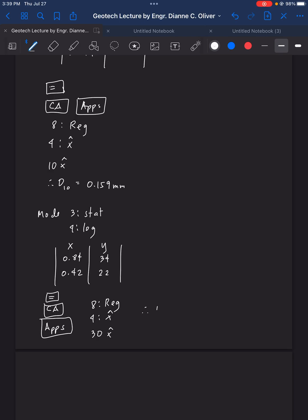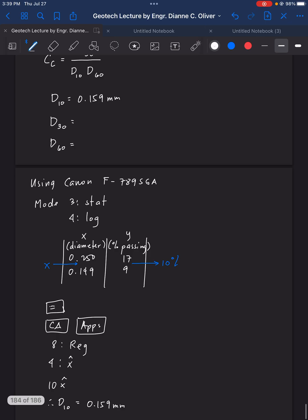Therefore, we have now, D30 equals 0.667 mm. So 0.667 mm.